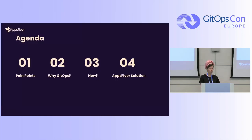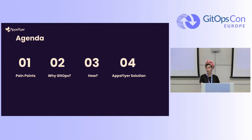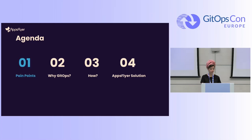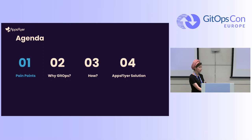We grew exponentially and we want to continue to grow, improve ourselves, and know how to handle this amazing growth. So we're going to talk about our developers' pain points that we found, and in order to continue to grow, we need to solve them. As you know, this is a GitOps conference — so why did we choose GitOps as our solution, how did we approach it, and what was our special AppsFlyer solution? We started to look at our developer experience and day-to-day activity to understand what the major pain points are.